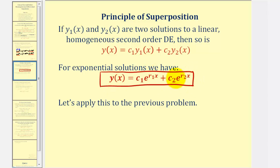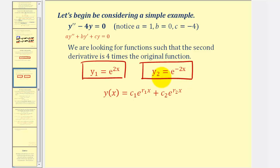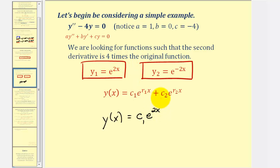This works when we find two solutions to our differential equation. So if we apply this to our previous example, since we found those two solutions, we can now apply the principle of superposition to find our general solution, which is y of x equals c sub one times e to the power of two x, plus c sub two times e to the power of negative two x. Notice that in this form, r sub one is equal to two and r sub two is equal to negative two. Now we're going to discuss a method for finding the values of r sub one and r sub two that will make solving these types of differential equations much easier.